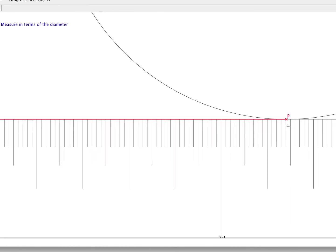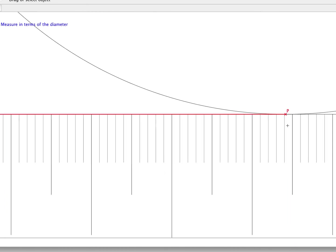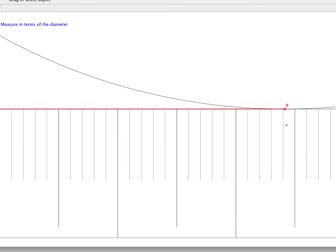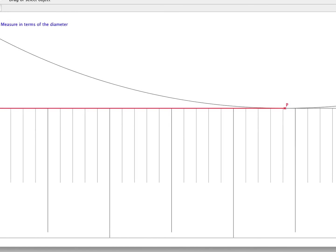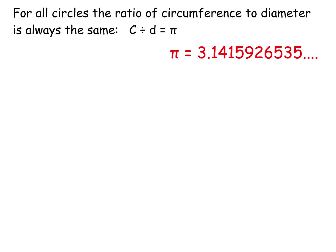So the circumference is just over 3.14 diameters, and that is the same for every circle. If you look at any circle and divide the circumference by the diameter, it comes up with a number we can't write properly as a decimal, because it has an infinite number of decimal places with no pattern. We call this number pi — the Greek letter P. Circumference divided by diameter for any circle gives pi; it is the ratio of the circumference to the diameter.